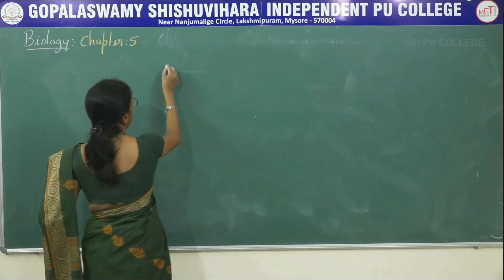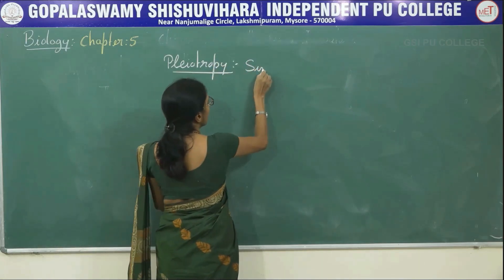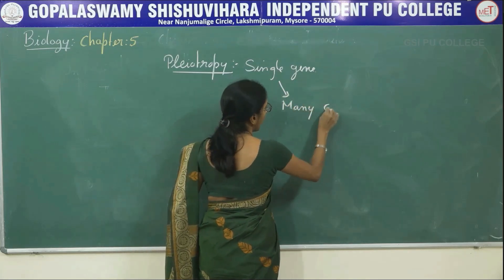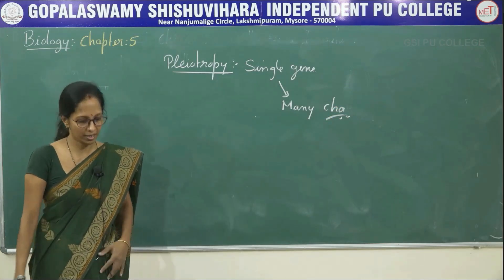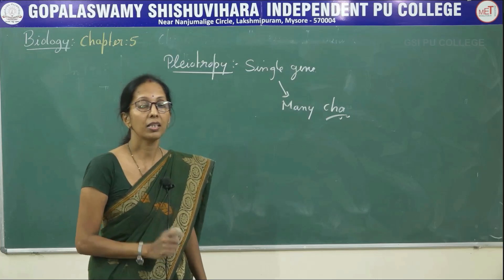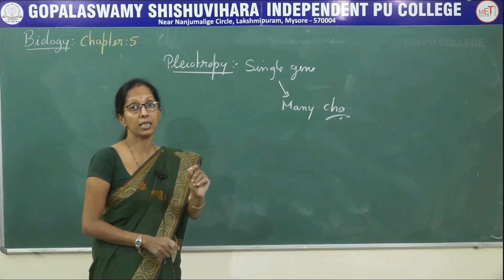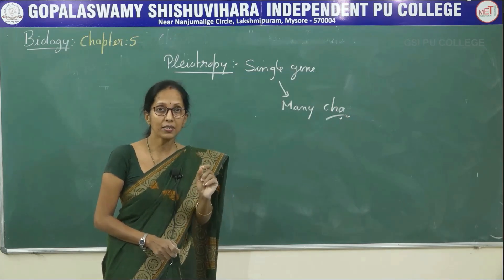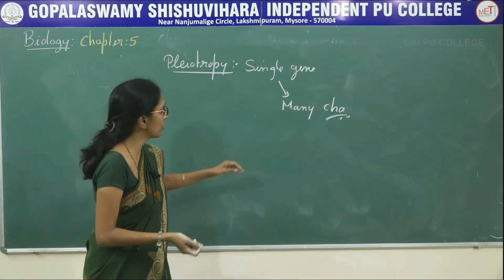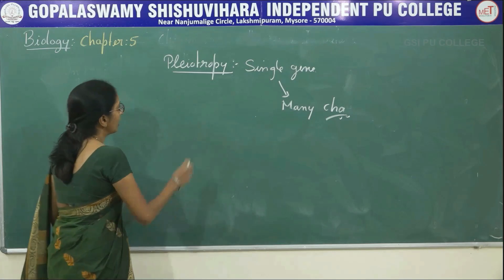Next is pleiotropy — a single gene that expresses many characters. The best example is in Drosophila, where the gene responsible for vestigial wings is also responsible for the development of several other traits. So pleiotropy means one single gene is responsible for many characters.